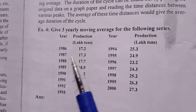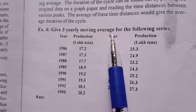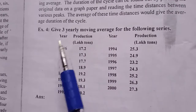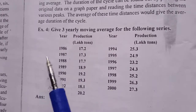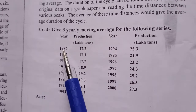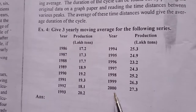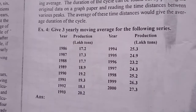The problem is: give the 3-yearly moving average for the following series. The year is given along with the corresponding production, starting from 1986.